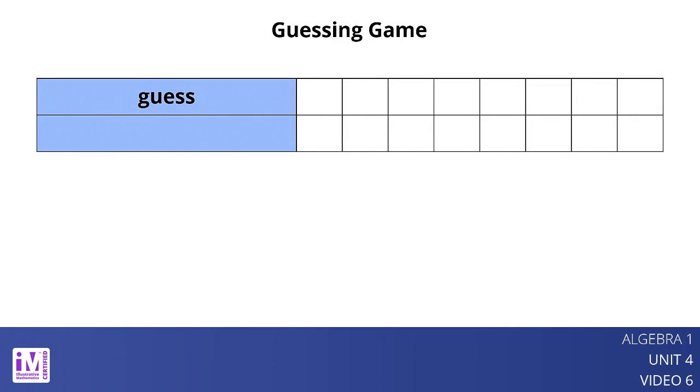Have you played a number guessing game where the guess that is closest to a target number wins? In such a game, it doesn't matter if the guess is above or below the target number. What matters is how far off the guess is from the target number or the absolute guessing error. The smaller the absolute guessing error, or the closer it is to 0, the better.